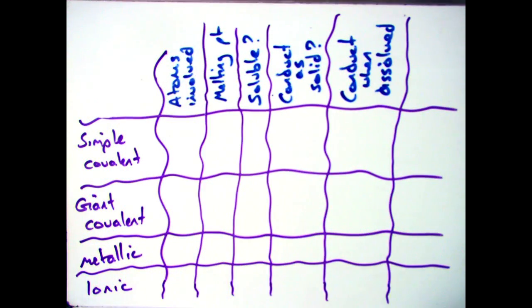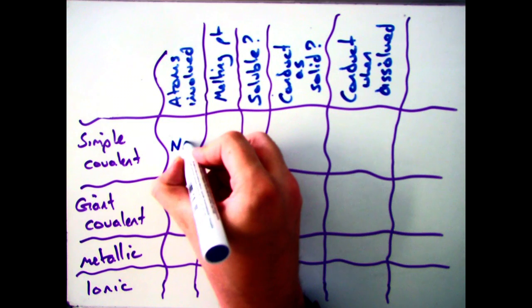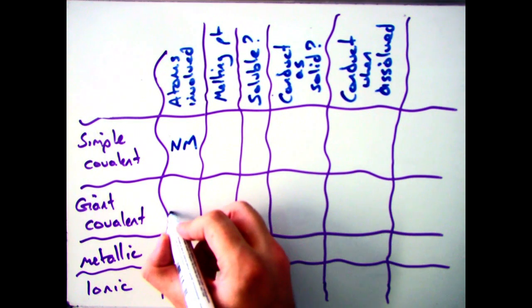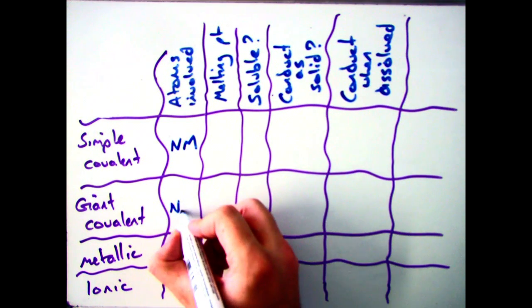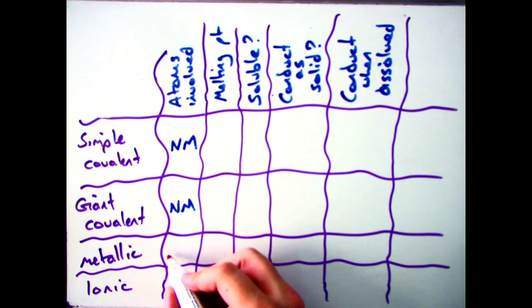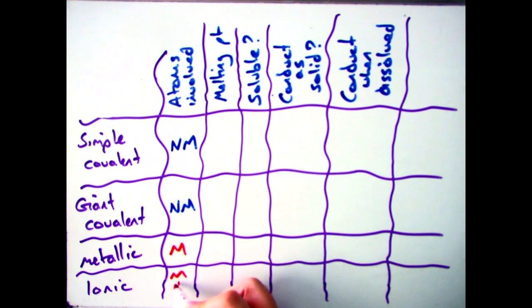If we look at the types of atoms involved in each of the different types of bonding: both simple and giant covalent have non-metals only in their structures, metallic contains metals only, and ionic contains both metals and non-metals. You must have at least one of each.